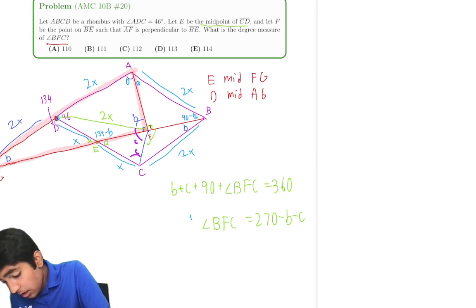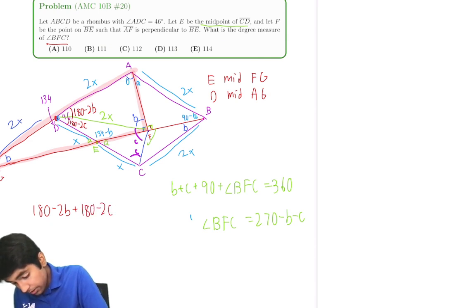The 46 condition is now what we have to try and use. We haven't used the sum of angles in this triangle yet. So that means that this part is 180 minus 2B. This part is 180 minus 2C.